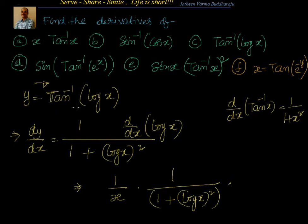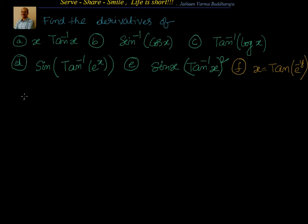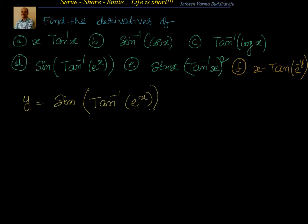Let's go to the next one: y = sin(tan⁻¹(eˣ)). This is very interesting. Looking from outer to inner, I see sin, then tan⁻¹, then eˣ. We'll apply the chain rule step by step. We need: d/dx(sin x) = cos x, d/dx(tan⁻¹ x) = 1/(1 + x²), and d/dx(eˣ) = eˣ.